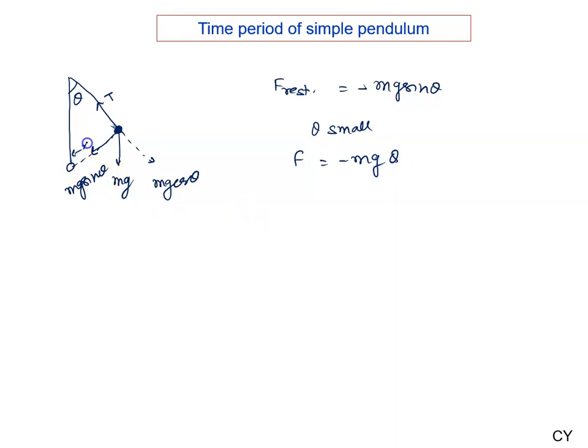Now, if I say this displacement is x and this length of the string is l, we all know very well that θ is written as arc upon radius, so we can say θ equals x upon l.